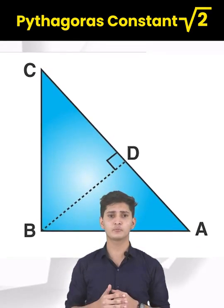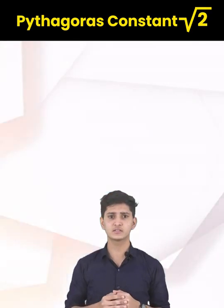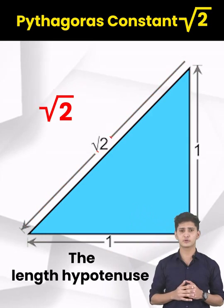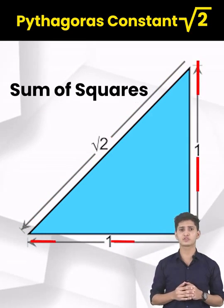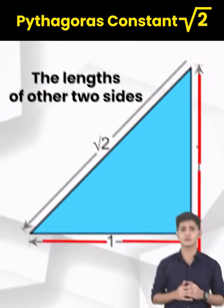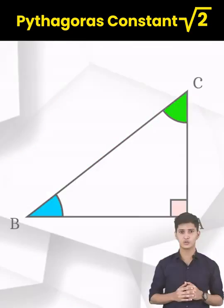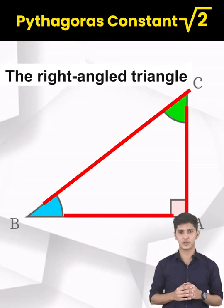The Pythagorean theorem states that root 2 is the length of the hypotenuse, which is equal to the square root of the sum of the squares of the lengths of the other two sides of a right-angled triangle.